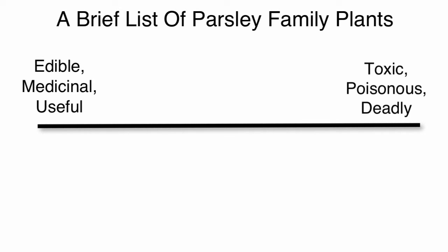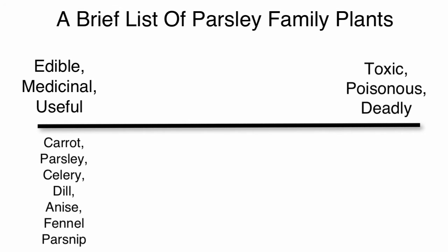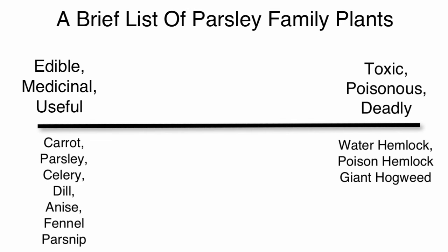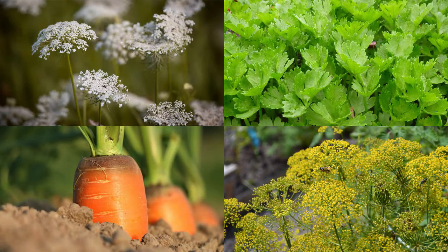Here's a brief list of parsley plants. We've got everything from highly edible plants — carrot, parsley, celery, dill, anise, fennel, parsnip — all the way to very nasty and deadly plants if you so much as touch them and forget to wash your hands, like water hemlock or poison hemlock. It's a very cool family because it does have so many edible and medicinal uses, but there should also be a big warning bell going off in your head when you see a plant like this. You should figure out the specific species before using it in any way.